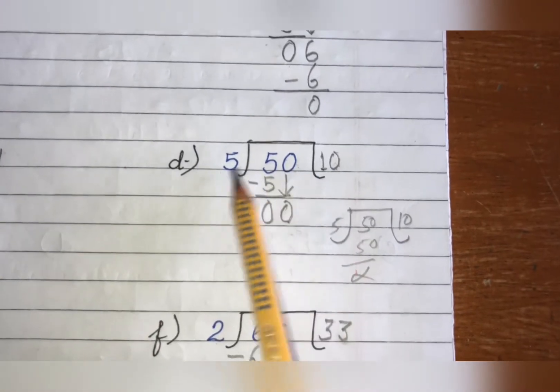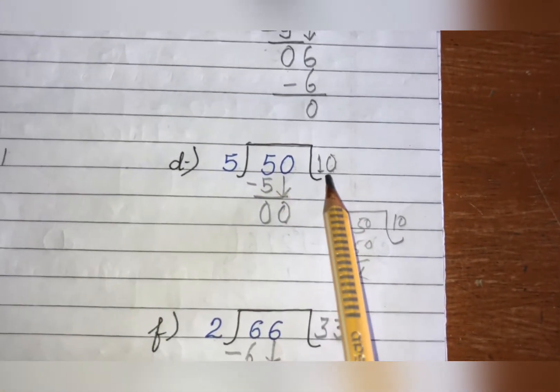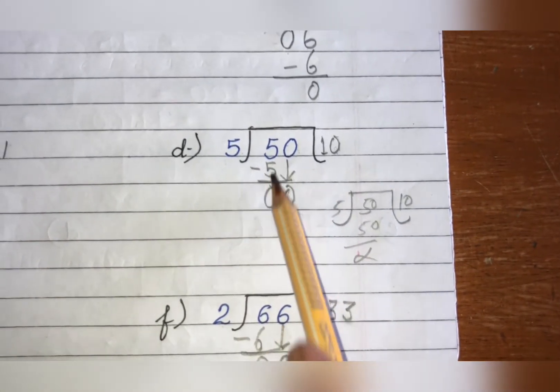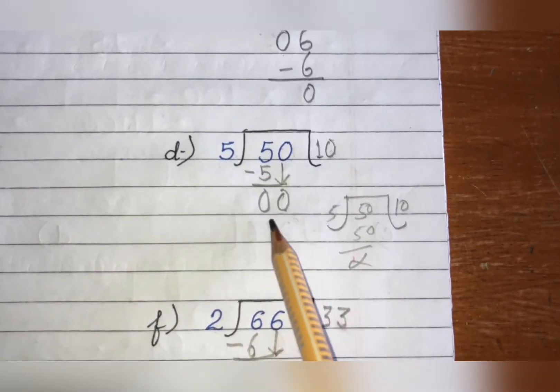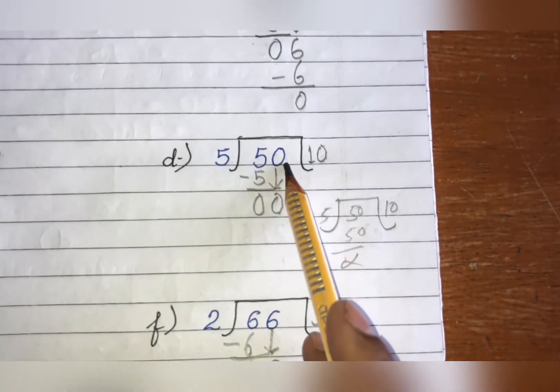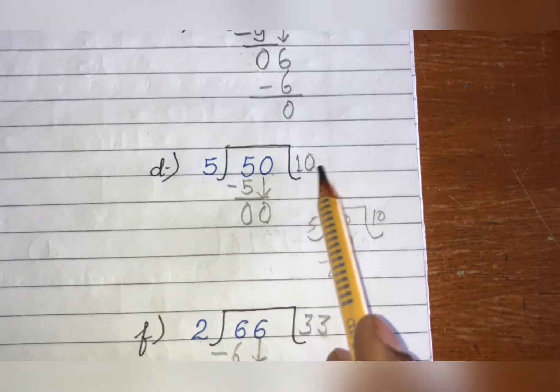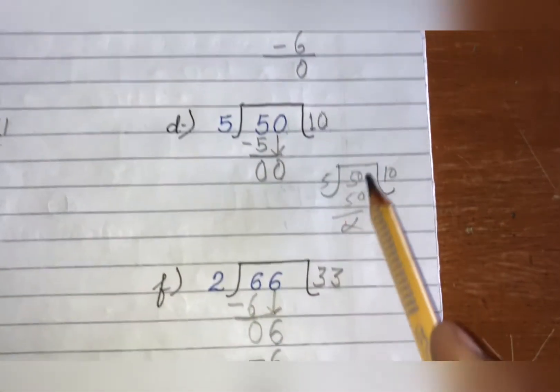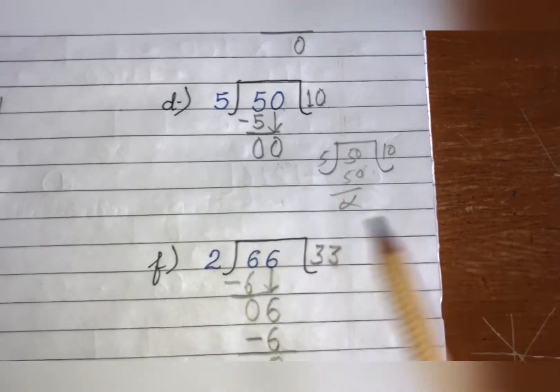एक तो आप डाइरेक्ट ऐसे कर सकते थे 5 10s are 50 क्योंकि हमें 10 तक तो सभी के टेबल आते हैं. या आप ऐसे कर सकते थे 5 1 is 5 लिखा पहले, माइनस किया, 0 आया. ये वाला 0 नीचे लेकर आए. तो जब आप कभी भी एक extra 0 नीचे लेकर आएंगे तो यहाँ पर भी एक 0 extra add कर देंगे. Understood? ये मैंने देखो 5 10s are 50 डाइरेक्ट वाला भी कर दिखाया.